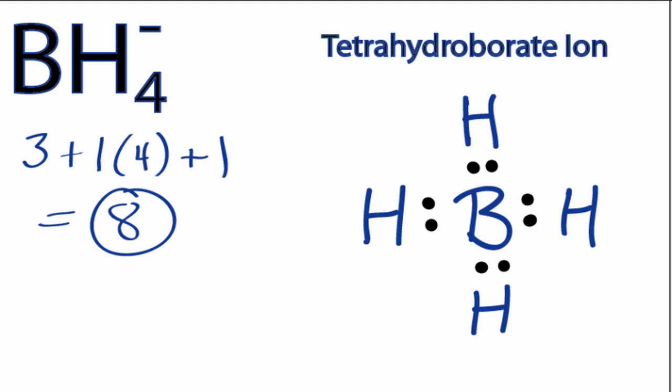So we've used all the 8 valence electrons for the BH4 minus Lewis structure, and each of the atoms has a full outer shell. Now, one last thing we need to do is put brackets around the ion to show that it has a negative charge.